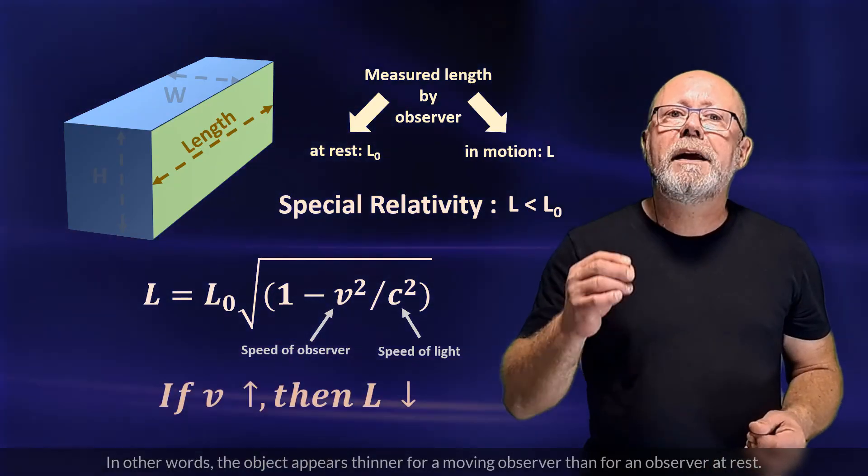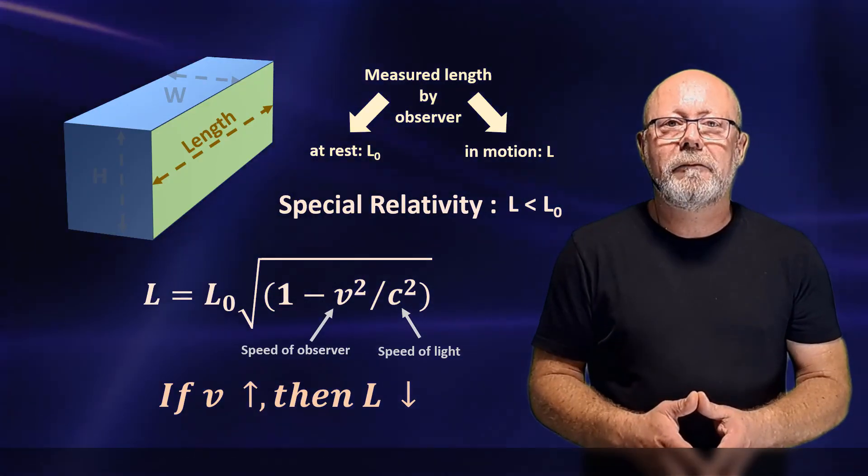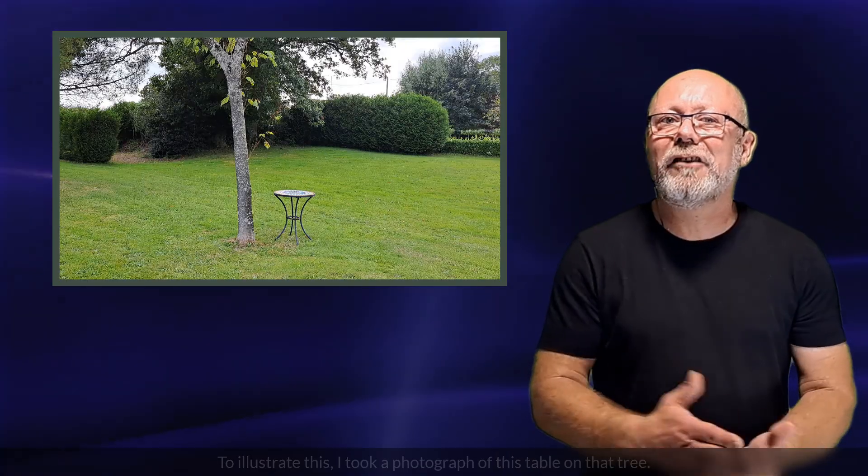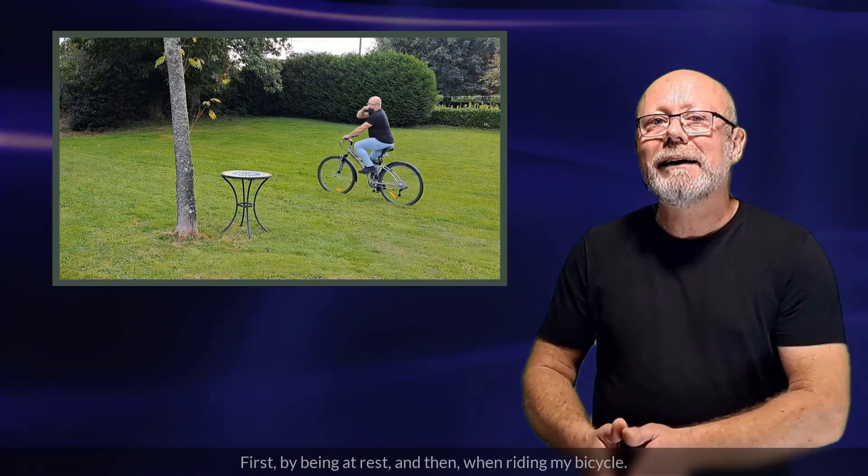As for the width and the height, these will remain the same for both observers because they are perpendicular to the moving observer's velocity. The value of L is L0 multiplied by the relativistic factor, which is square root of 1 minus the ratio V squared over C squared, where V is the speed of the moving observer and C the speed of light. In other words, the object appears thinner for a moving observer than for an observer at rest. To illustrate this, I took a photograph of this table under that tree. First, by being at rest, and then, when riding my bicycle.